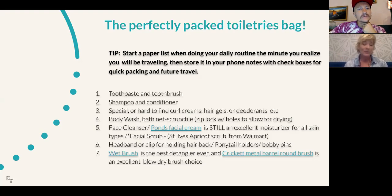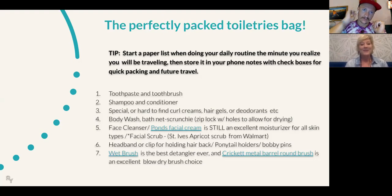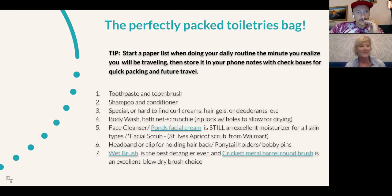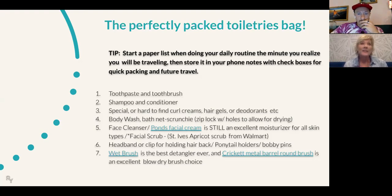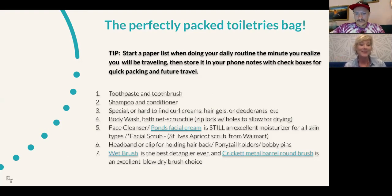With your toothbrush, do bring a good one — not travel toothbrushes because they are flimsy. The ones from your dentist are a great choice. For shampoo and conditioner, don't stress; shampoo and body wash are essentially the same thing. If you have special hair needs — wild curly hair, skin problems, or a specific deodorant that works for you — I highly recommend you bring those. I learned the hard way I can't find my deodorant here.